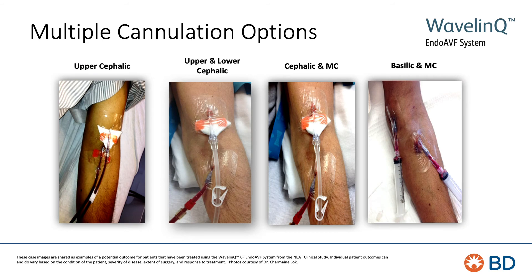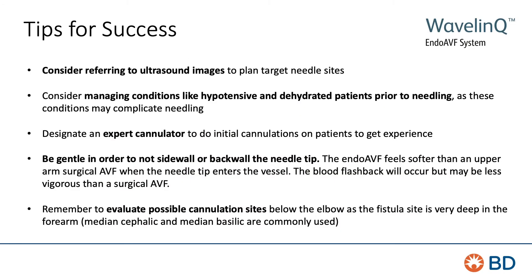These images show examples of potential vessel cannulation options: two needles in the upper cephalic; one needle in the upper cephalic and one in the lower cephalic; one needle in the cephalic and one in the median cubital; and one needle in the basilic and one in the median cubital. It is important to note that one patient may have multiple appropriate outflow vessels that can be used for cannulation if directed to do so by the creating physician.